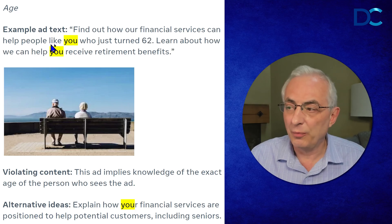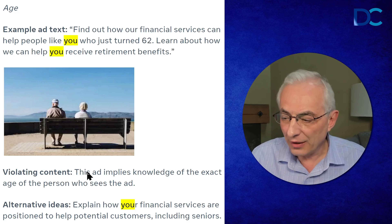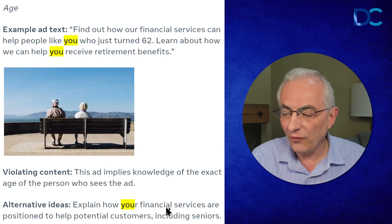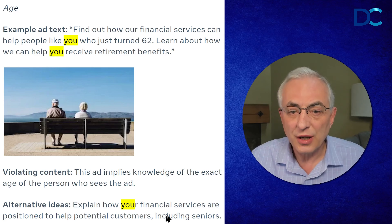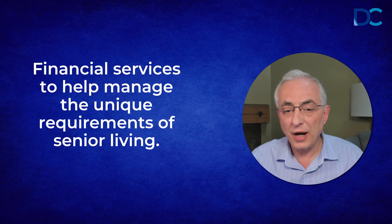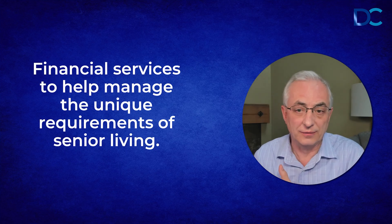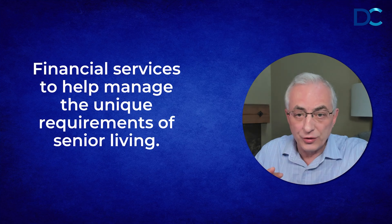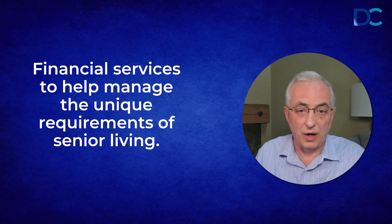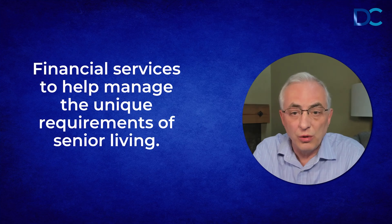The ad 'Find out how our financial services can help people like you who just turned 62 — learn more about how we can help you receive retirement benefits' — the problem is this ad implies knowledge of the exact age of the person who sees it. The alternative is to explain how your financial services are positioned to help potential customers, including seniors. For example: 'Financial services to help manage the unique requirements of senior living.' I'm not saying I know how old you are. I'm stating the benefits and features of my program.